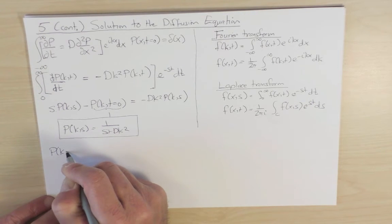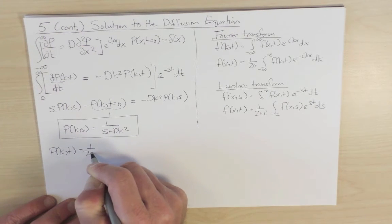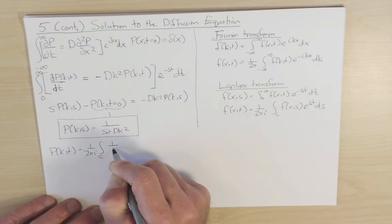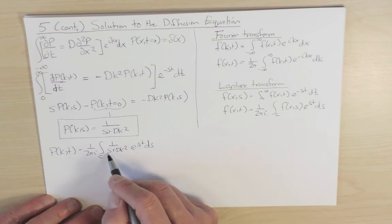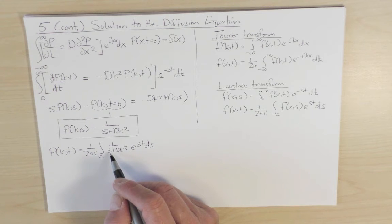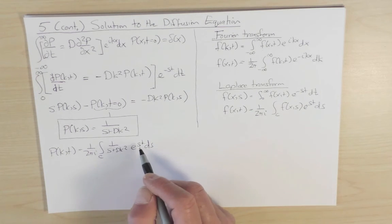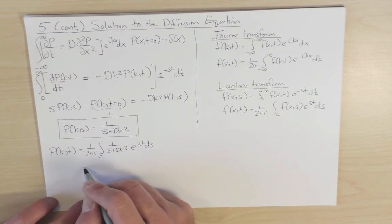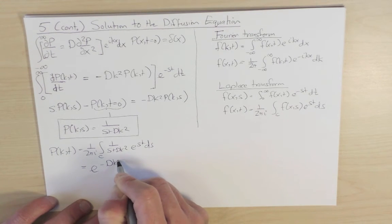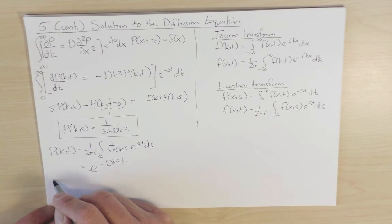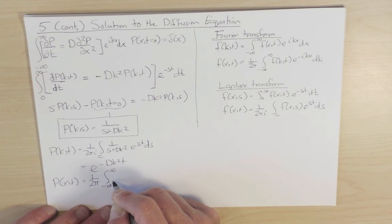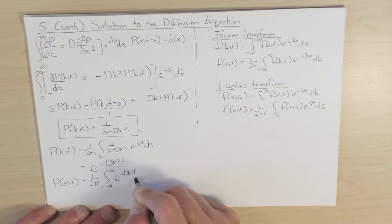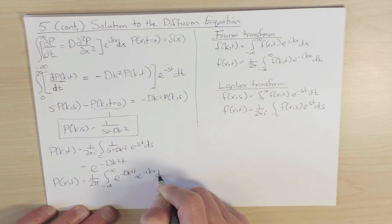Now we invert the Fourier-Laplace transform step by step. First, p(k,t) equals one over 2πi times the Bromwich contour integral of one over (s plus D k squared) e to the st ds. This function has a singularity at s equals minus D k squared, so we compute 2πi times the residue there, giving p(k,t) equals e to the minus D k squared t. Then p(x,t) is the inverse Fourier transform: one over 2π times the integral from minus infinity to infinity of e to the minus D k squared t times e to the minus ikx dk.